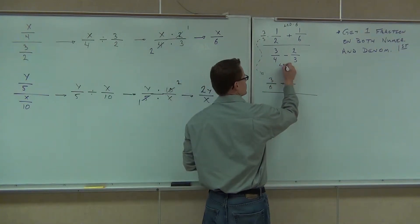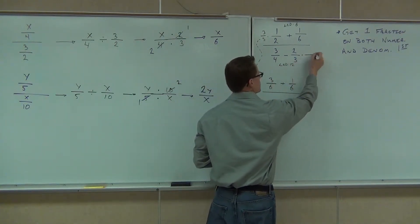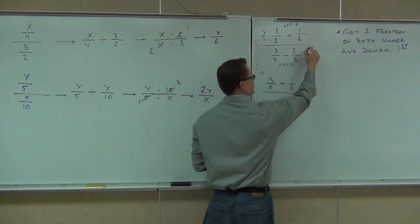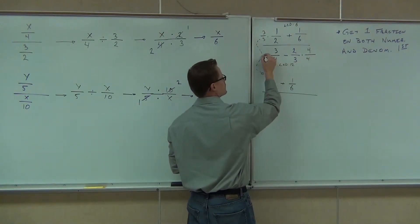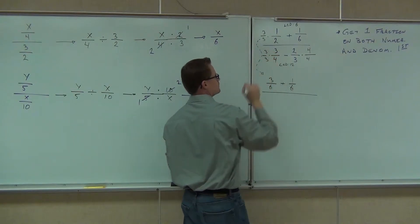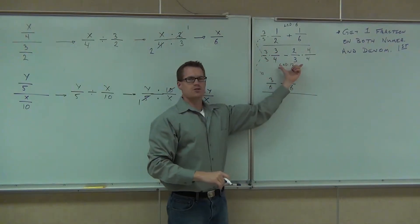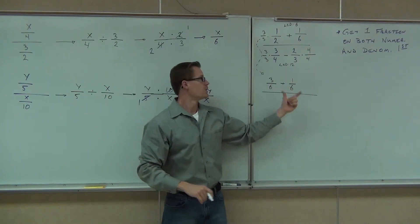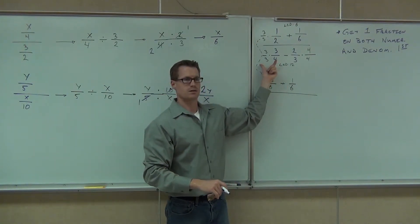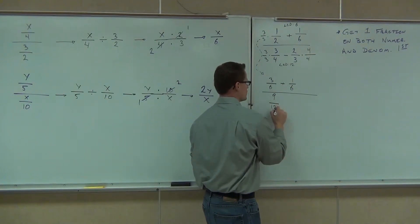LCD here was 12. What do I multiply the right fraction by? Four. And somebody else, what do I multiply the left fraction by? Three. So these two fractions are going to make up my new main denominator. What's the left fraction give you? Nine-twelfths. Someone else, what's the right fraction give you? Eight-twelfths.